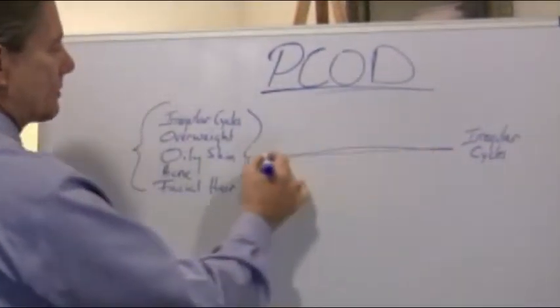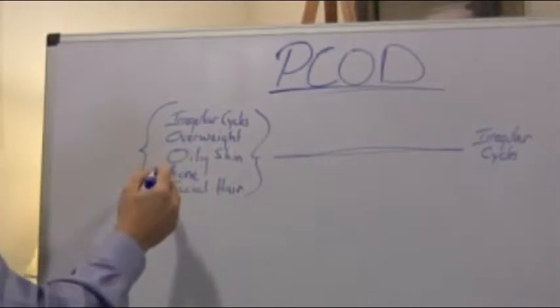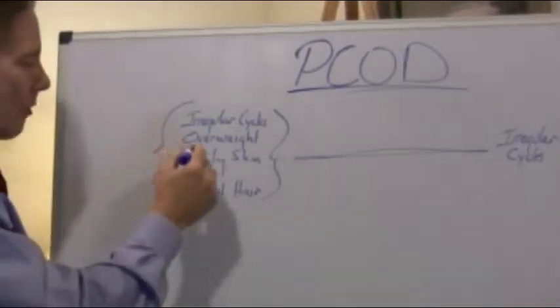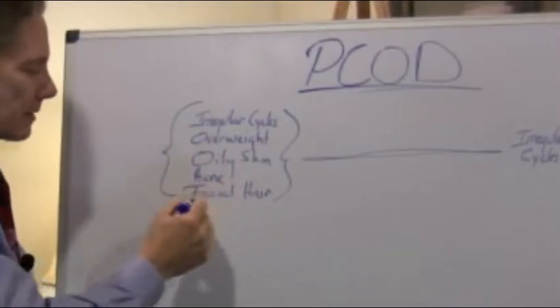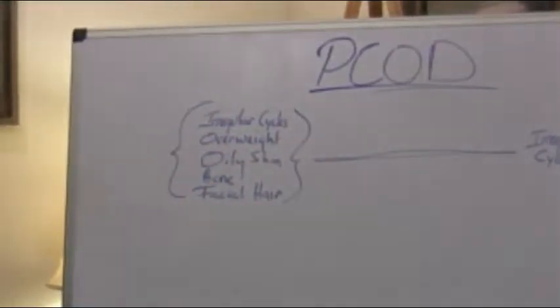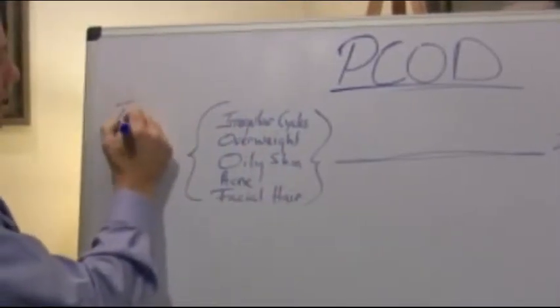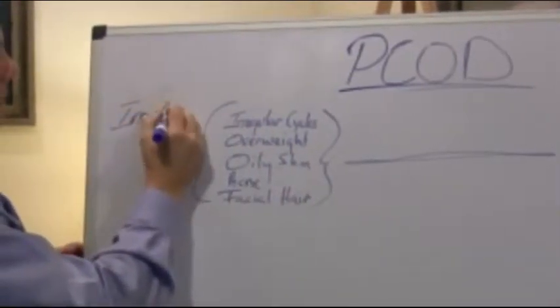On the other end of the spectrum, we have patients that will have irregular cycles, but they can also have a problem with being overweight, oily skin, acne, facial hair, and so this end of the spectrum are patients that have what we call insulin resistance.